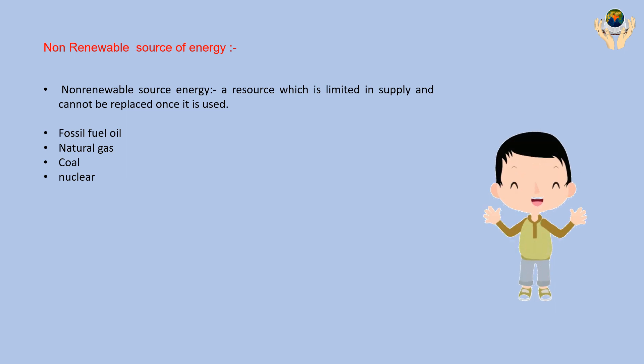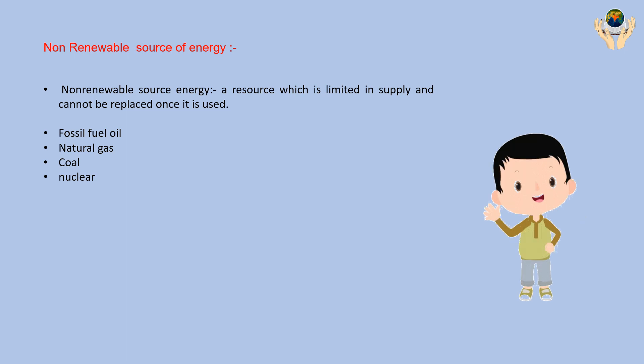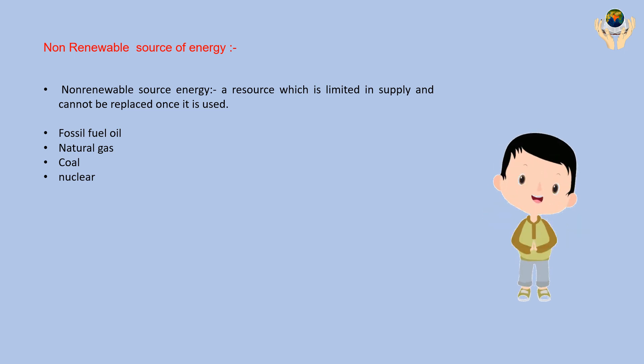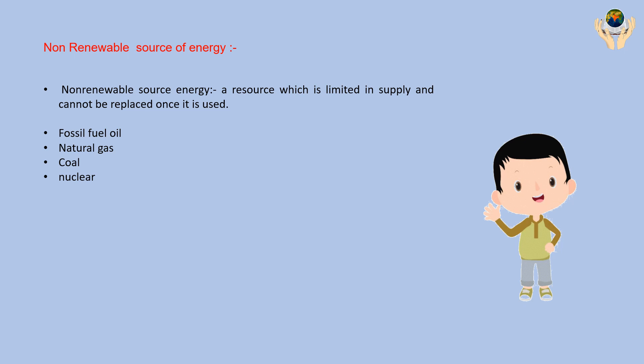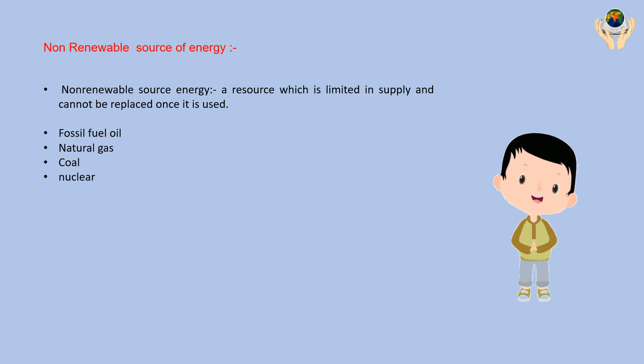Non-renewable energy is a resource that is limited in supply and cannot be replaced once it is used. Fossil fuels, natural gas, coal, and nuclear energy are the best examples of non-renewable energy.